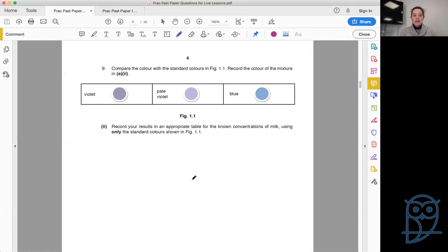We're told to compare the color of our samples with the standard colors in figure 1.1 and record the color of the mixture in A part 2. A part 2 tells us to record your results in an appropriate table for the known concentrations of milk using only the standard colors in figure 1.1, which means we're going to have to be very careful that we only use violet, pale violet, and blue. We know a Biuret test goes from blue to purple if it's positive, and we're working here with known concentrations of milk.